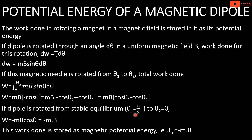Setting θ₁ equal to π/2 and θ₂ equal to θ, and evaluating the integral, this work done is stored as magnetic potential energy. Therefore, U_m equals minus M dot B.